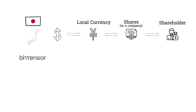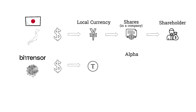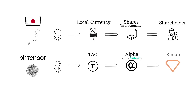BitTensor is no different. Let's say that you want to buy shares in a BitTensor company. In BitTensor, we call these shares alpha. You're going to convert your currency to the local BitTensor currency, tau. Once you have tau, you can use it to purchase shares, or alpha, in a BitTensor company called a subnet. Once you've purchased your alpha, you're called a staker, although the technical term is a delegator or a nominator.